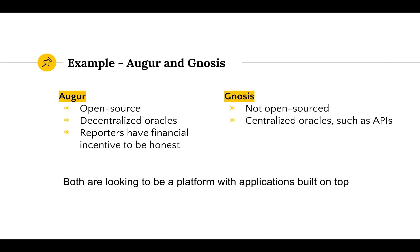Augur is open sourced, whereas Genesys currently is not, though the plan is to open source it eventually. Augur uses decentralized oracles — specifically the Augur community — whereas Genesys uses centralized oracles and APIs. In the Augur model, the oracles are the community of rep holders who report on each prediction in the network. Reporters have financial incentive to be honest: if they report accurately, they are rewarded with a percentage of rep tokens; if they report dishonestly, they lose a percentage. Both projects aim to be platforms with applications built on top that use the reporting data generated through their communities.